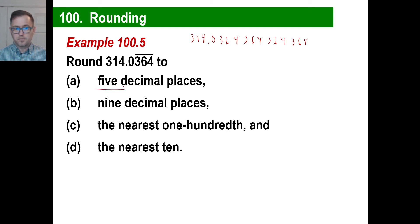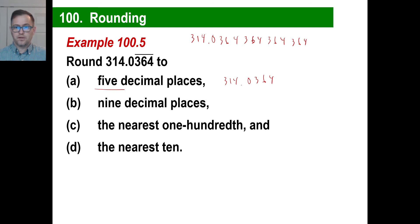So 5 decimal places: 1, 2, 3, 4, 5. We're going to say this is 314, then 0, 3, 6, 4, and one more — that's going to be a 3. But look, the next digit is a 6, so this rounds us up to a 4. And there we go — that's 5 decimal places.